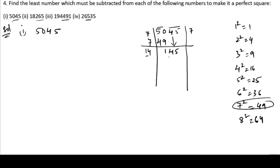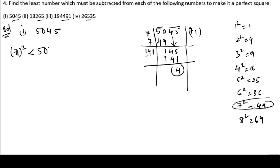Write down 7 again; 7 plus 7 is 14. We need the nearest number to 141 in the 14-times table. The nearest is 141 — one times 141 is 141. So we multiply 141 by 1 to get 141. Subtracting, we get remainder 4. So the square of 71 is less than 5045 by 4.